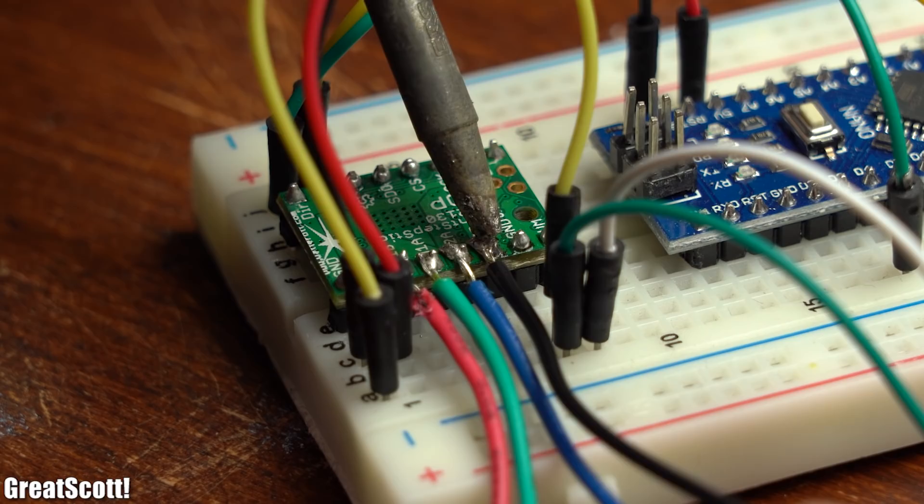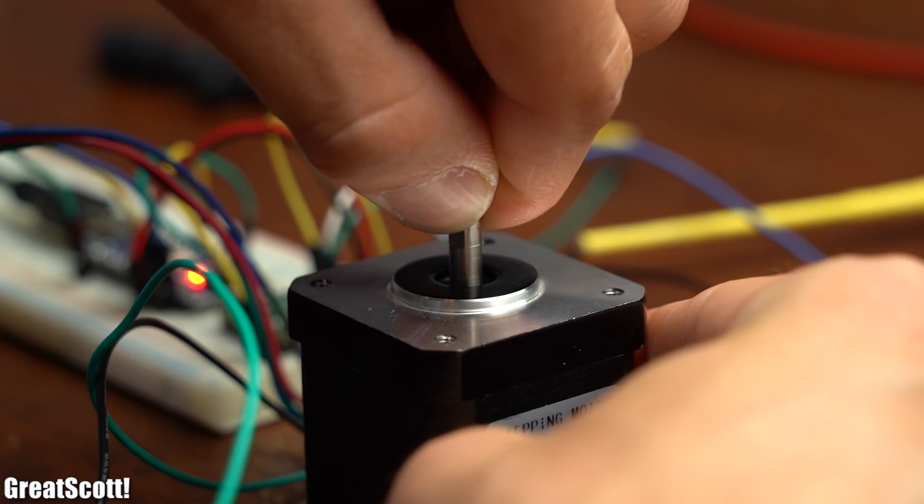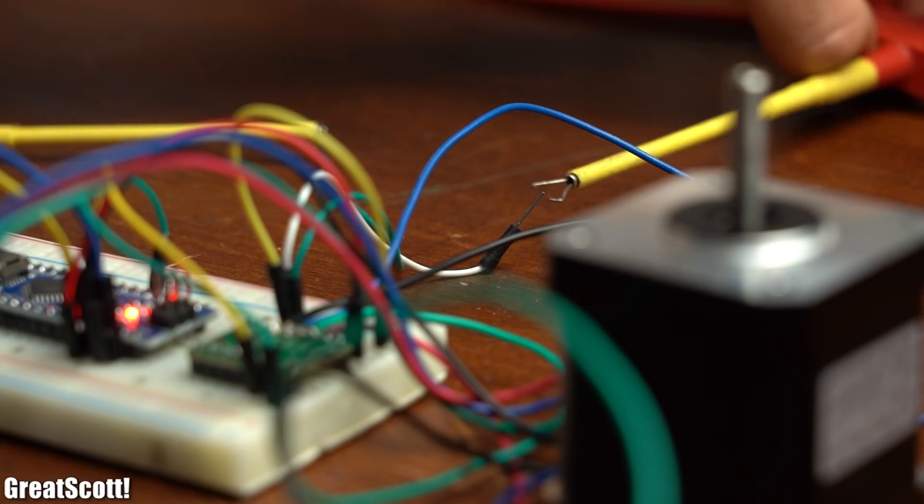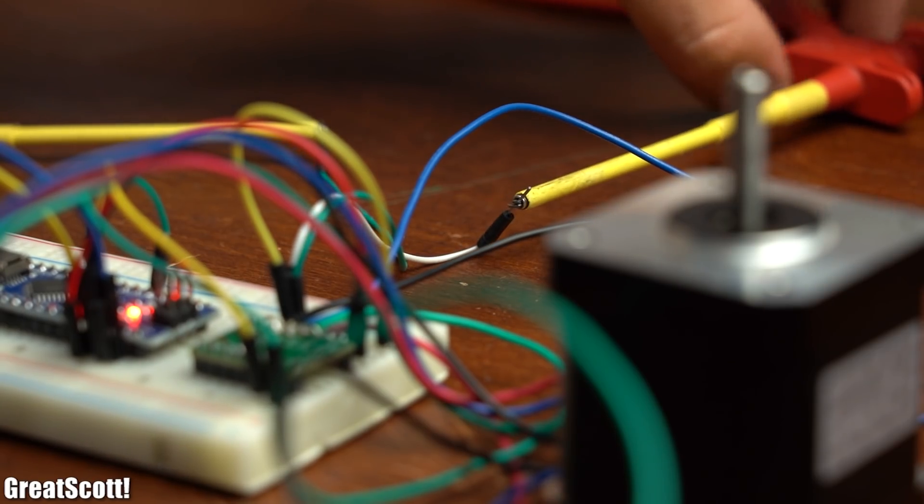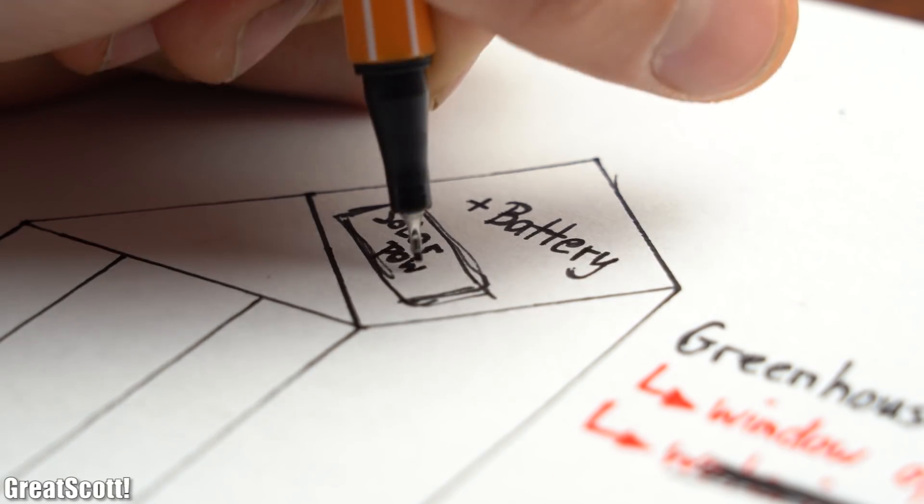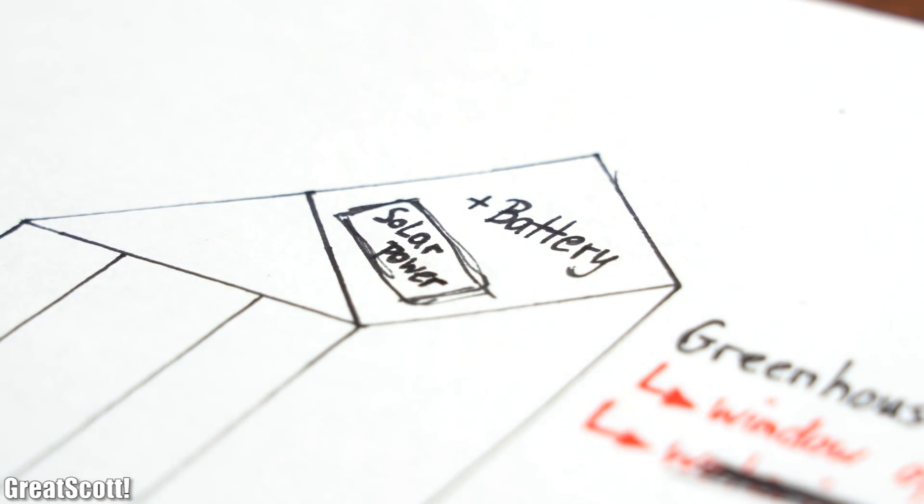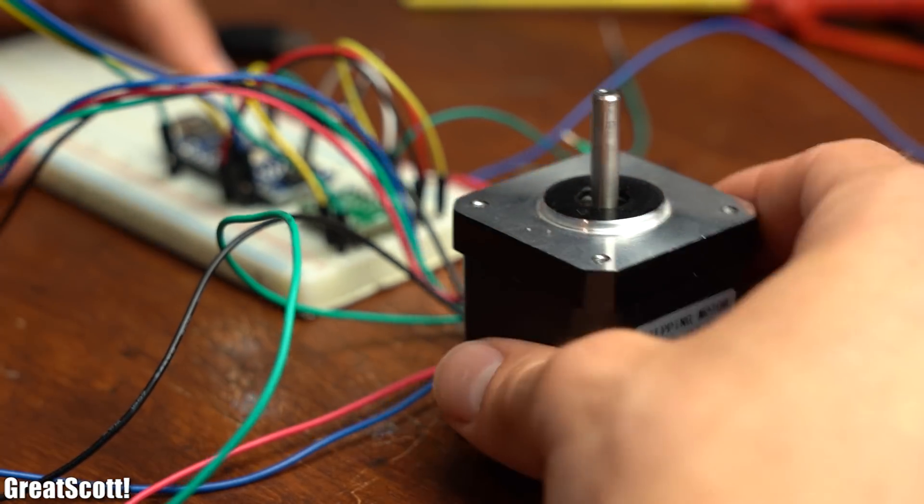Stepper motor drivers however do come with such an option and therefore feature suitable holding torque. But the catch is obviously that powering the stepper motor would require quite a bit of energy. And since we are working with solar power and a battery we should definitely avoid that which means that the stepper motor is out as well.